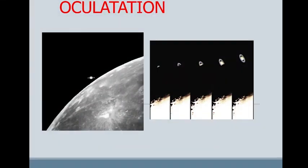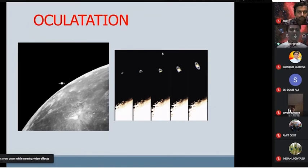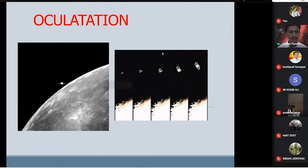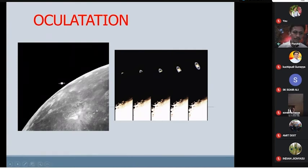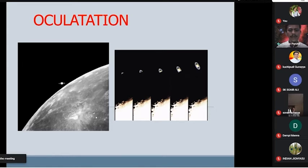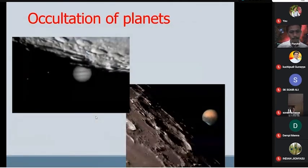The next thing we can observe is occultation. Occultation is one type of eclipse, but in occultation the sizes of the bodies are different — one is smaller and one is bigger, with the bigger object covering the smaller one. I am showing an image of Saturn's occultation. The moon always rises 50 minutes late every day, and while moving in the sky it covers a few stars and sometimes planets — we call these planetary occultations.